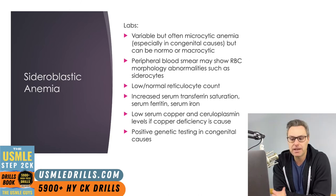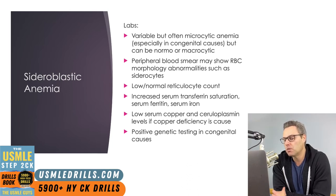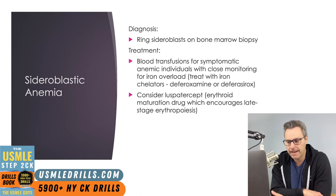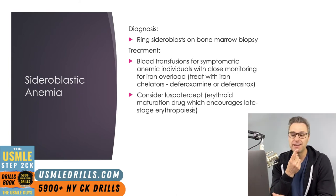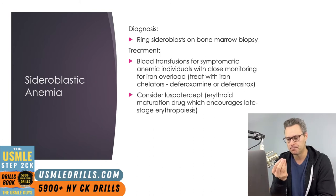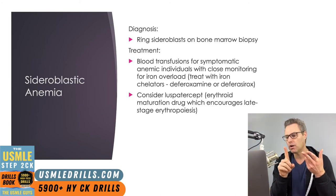Patients will have a low to normal reticulocyte count, increased serum transferrin saturation, increased serum ferritin, and increased serum iron. Low serum copper and ceruloplasmin levels can be seen if copper deficiency is the cause. Diagnosis of sideroblastic anemia is confirmed when ring sideroblasts are seen on bone marrow biopsy. Treatment includes blood transfusions if patients are symptomatic, with close monitoring for iron overload — especially with frequent transfusions — which can be treated with iron chelators like deferoxamine or deferasirox.